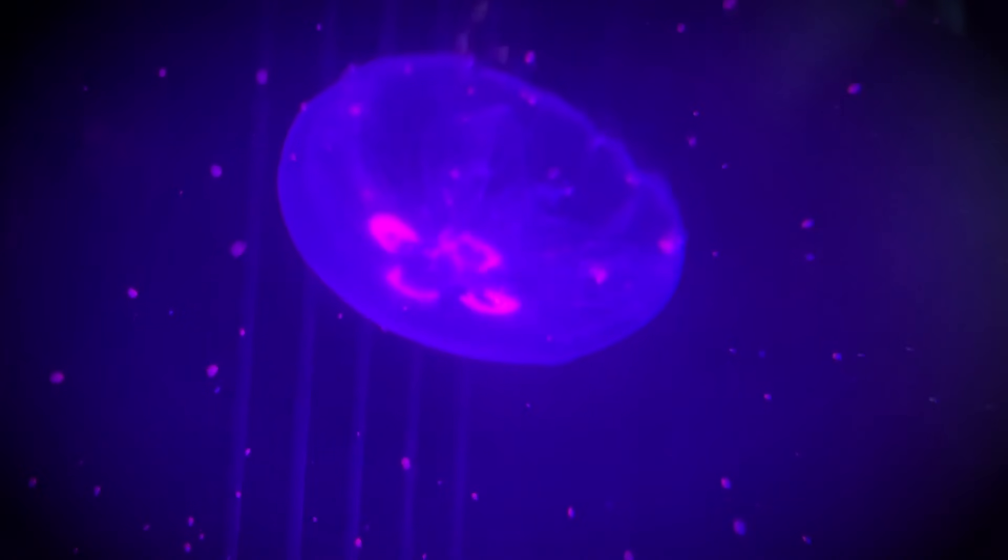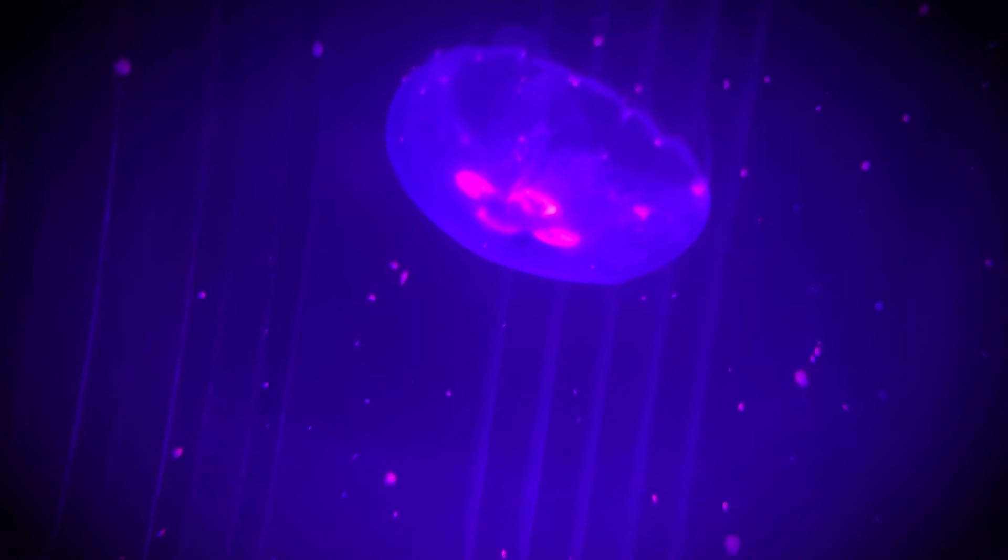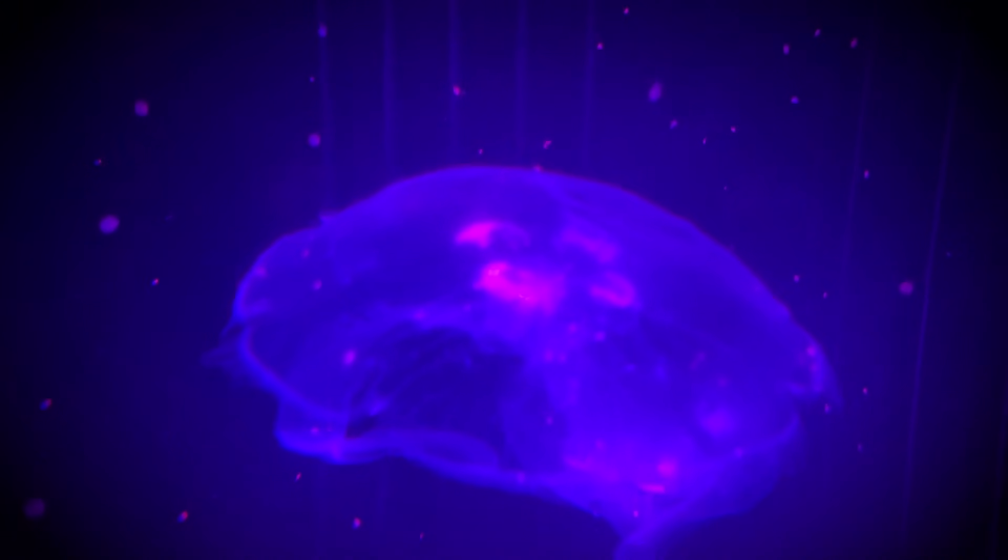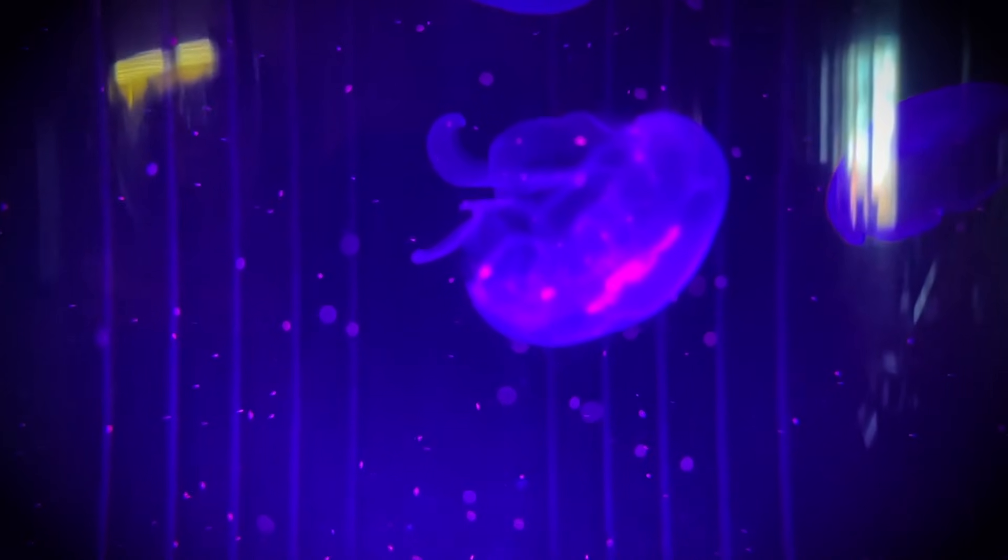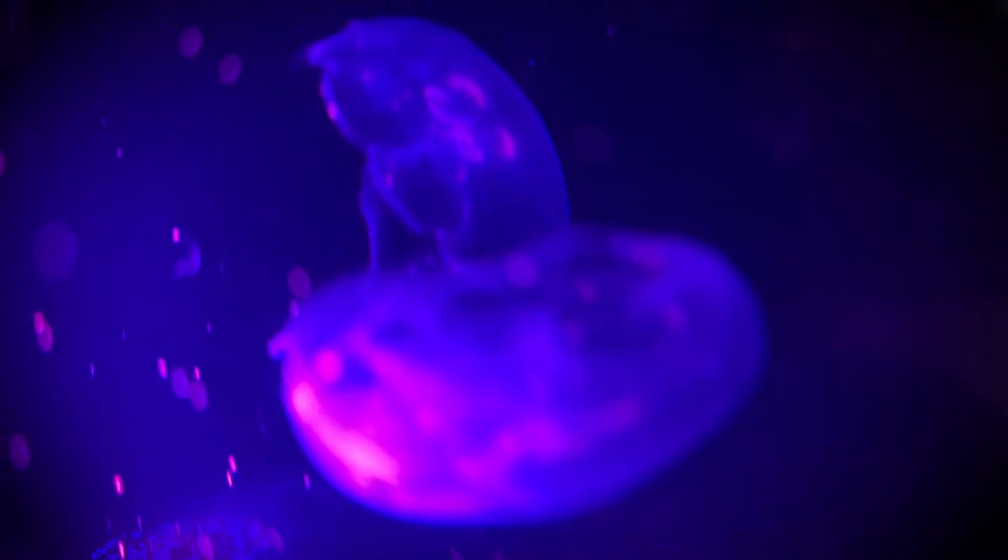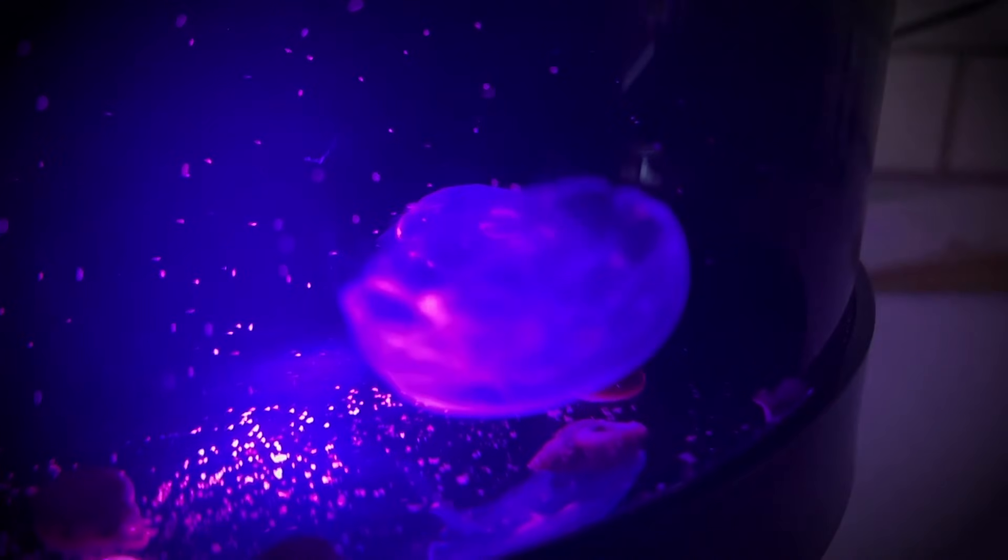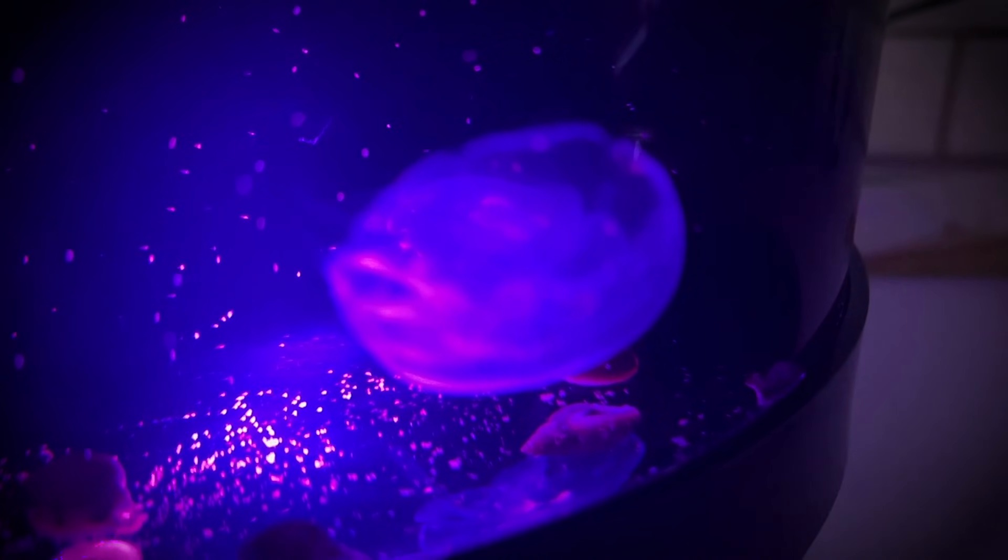These glowing shapes in the middle of the bell of these jellies is actually their stomach system. And if you get the lighting perfectly, these brine shrimp actually glow this red color inside of their stomach, which is super cool.